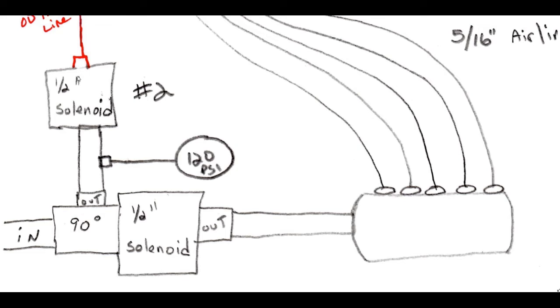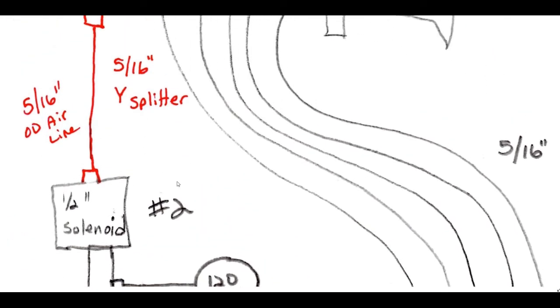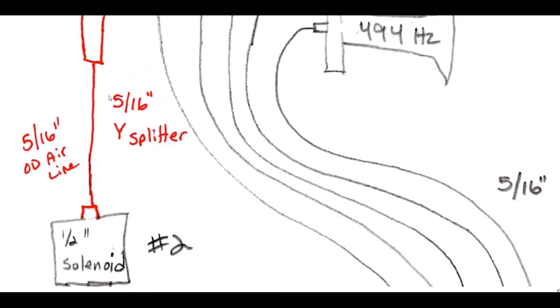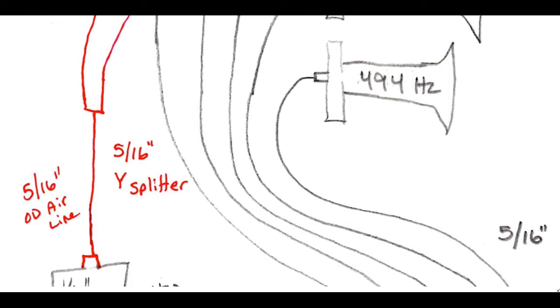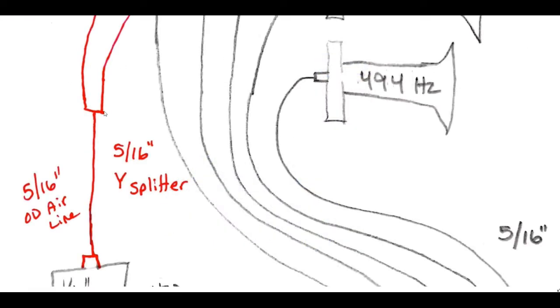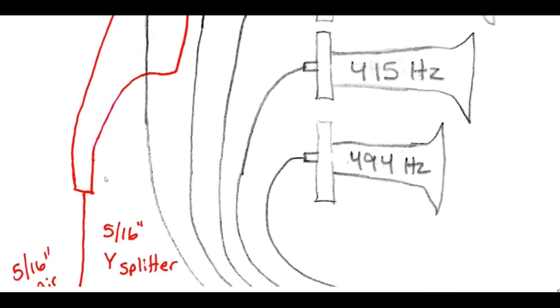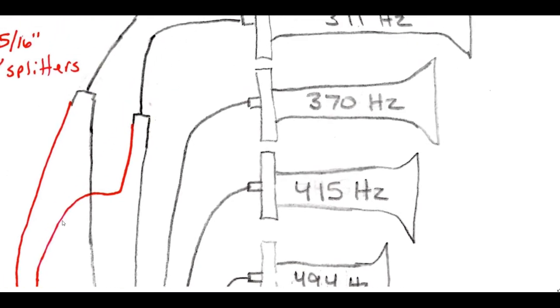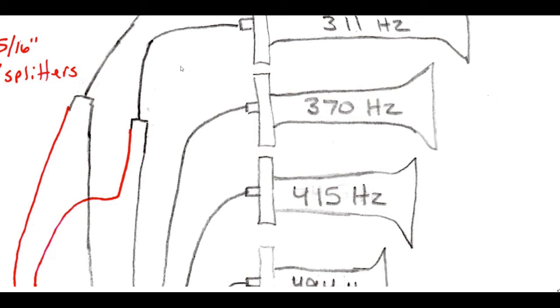When you trip solenoid number two, the air is going to come right through this solenoid and it is necked down to another five-sixteenths push to connect fitting in a five-sixteenths line, the same as each one of these over here off of this manifold, which is going to severely limit the amount of air that can flow through here. Now it goes into a Y splitter, like this one in and two out, or two in and one out however you look at it, and it splits into two five-sixteenths lines.